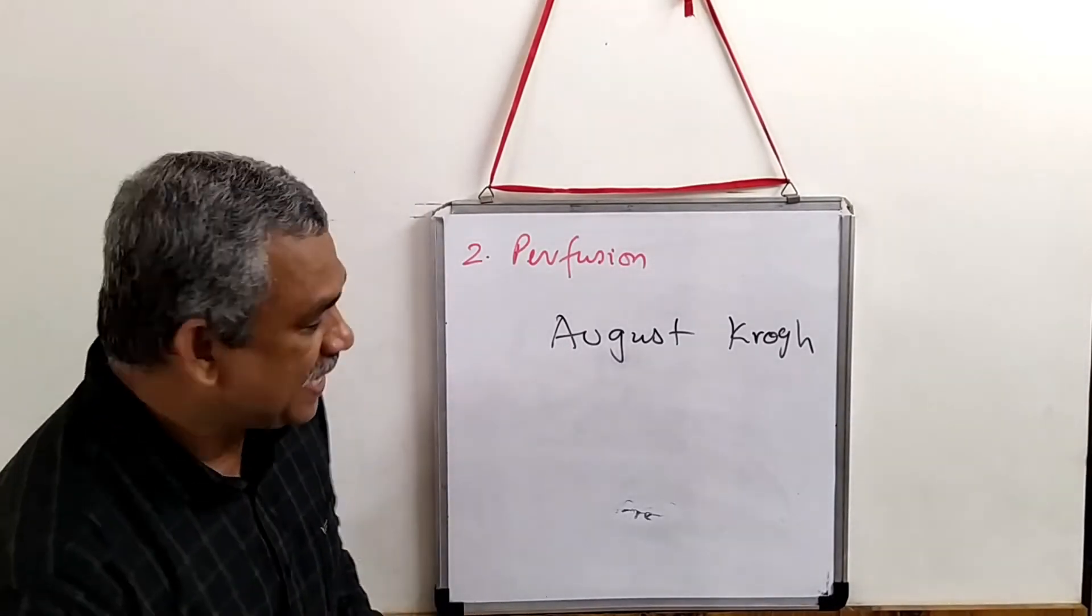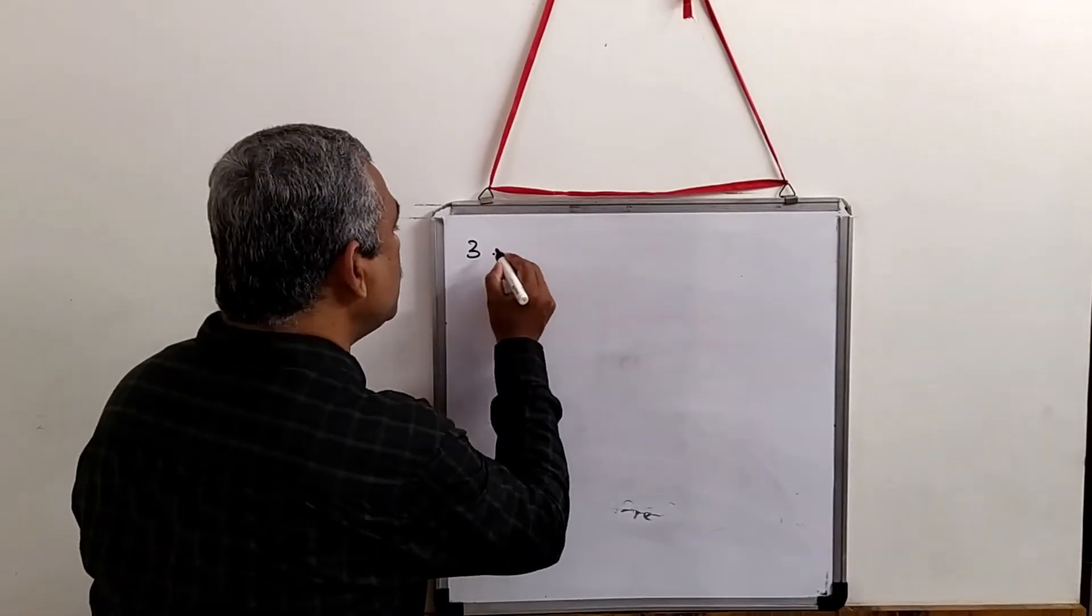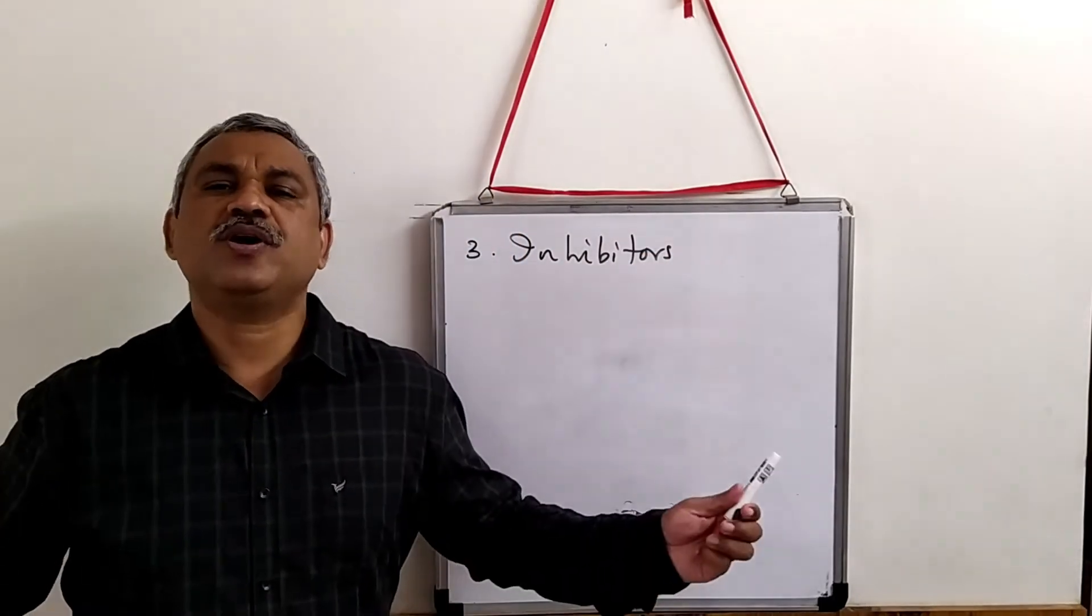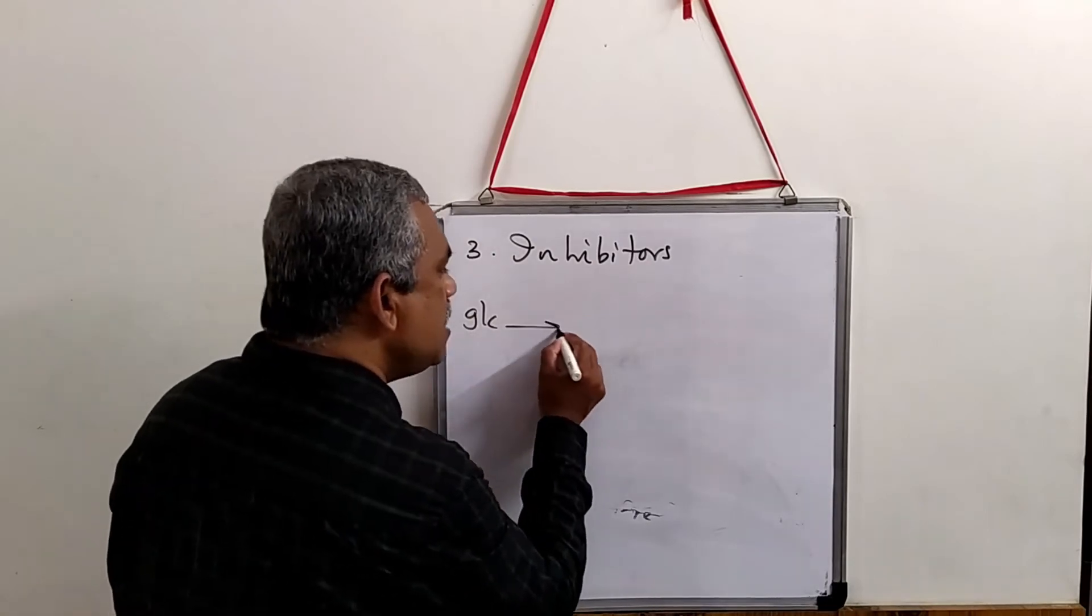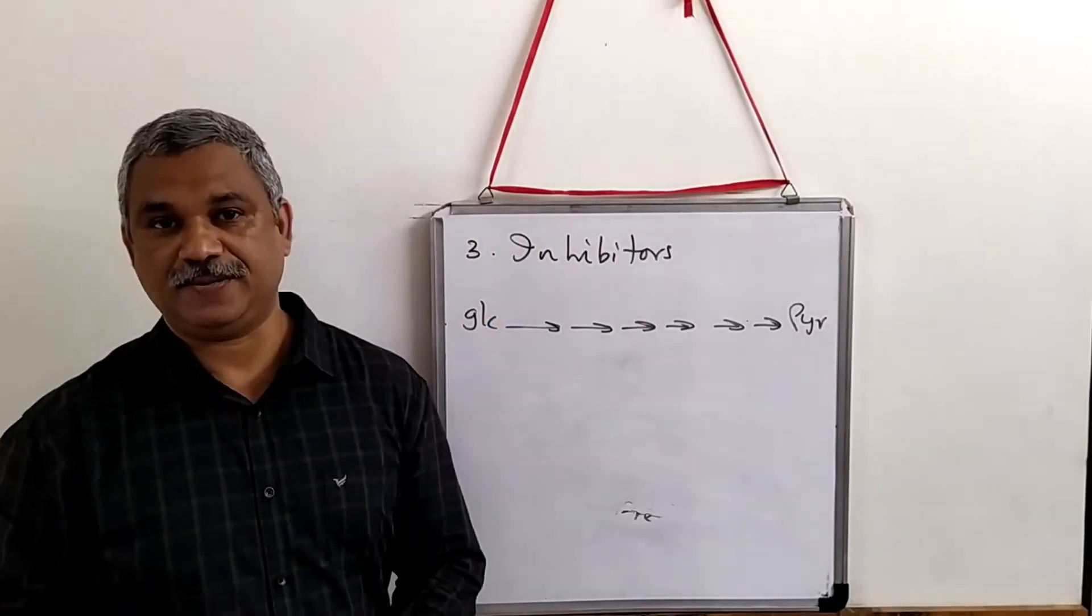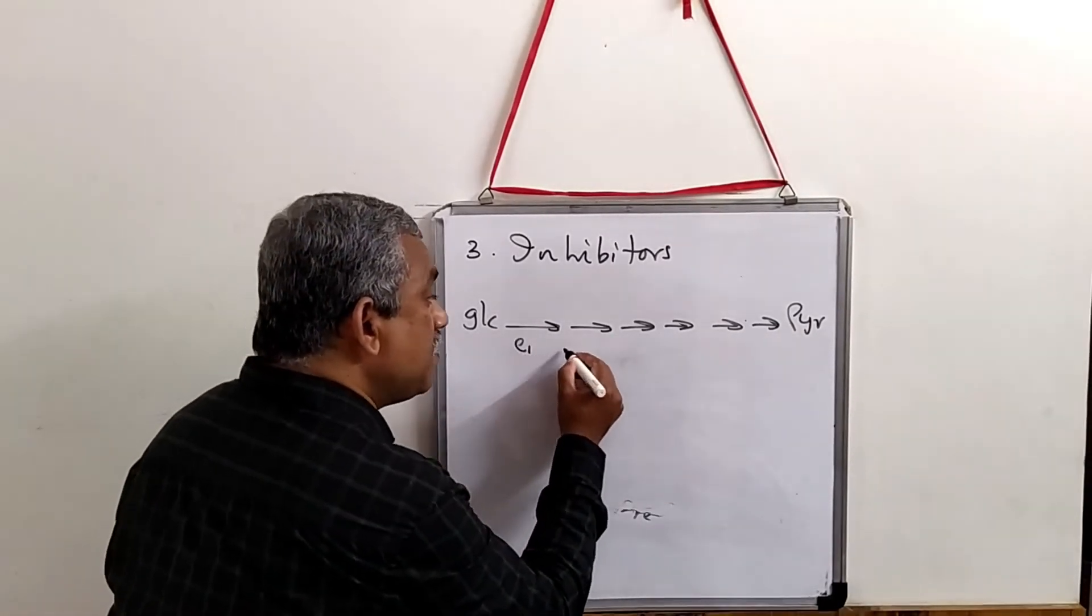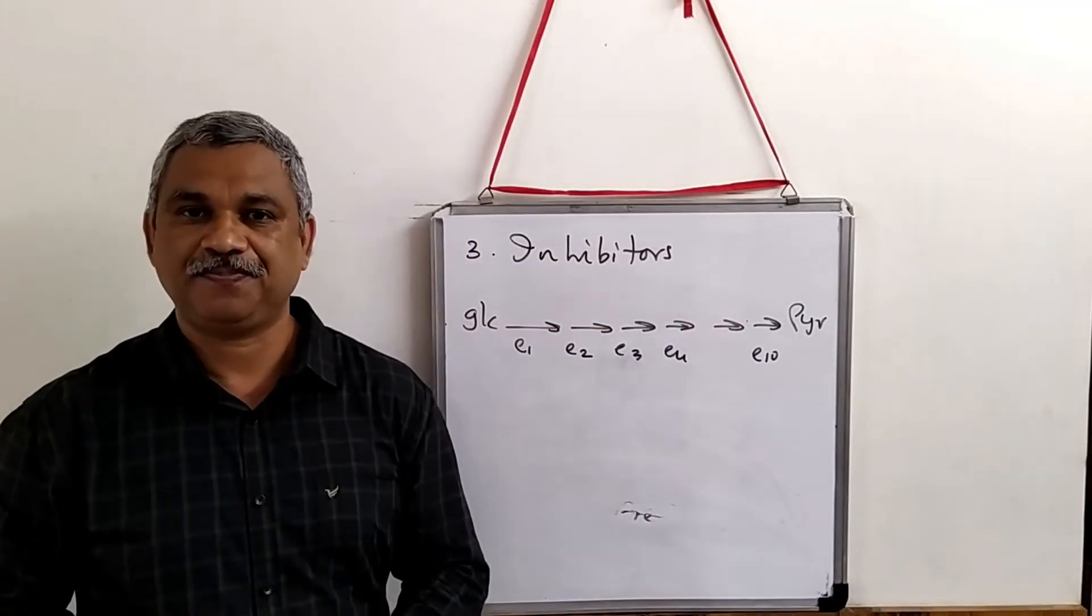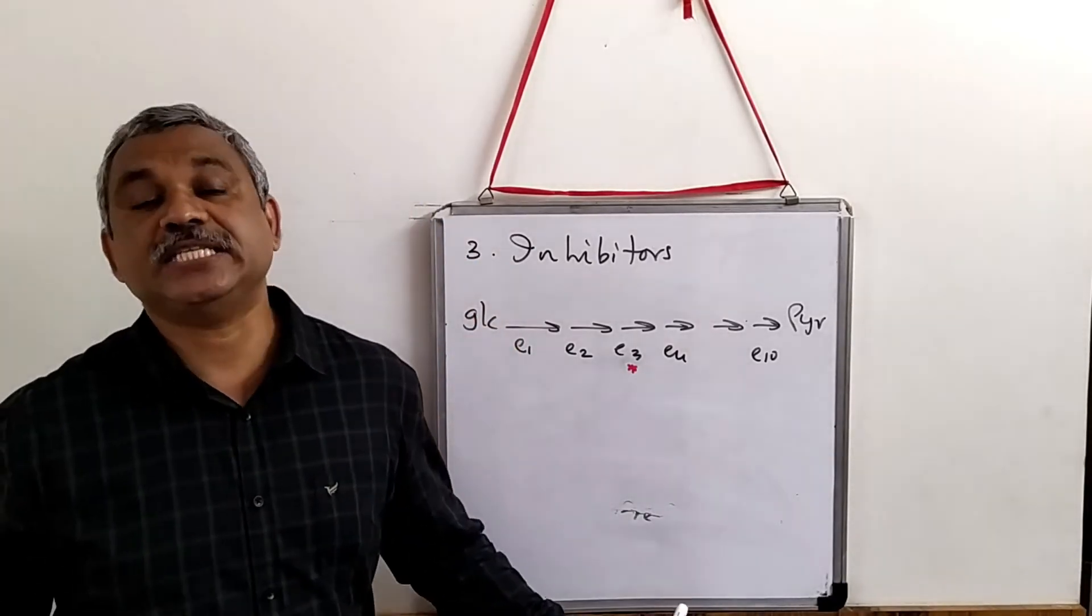The third mechanism we are going to study is inhibition studies - use of inhibitors. Now when you look at a metabolic pathway, assume it is glycolysis. You start with glucose and in a series of steps you finally have the product pyruvate. It happens in 10 steps with enzymes E1, E2, E3, E4 through E10. Suppose you use a substance which will inhibit this particular enzyme, E3 is inhibited.